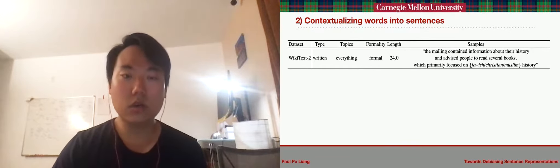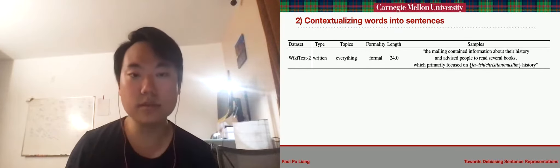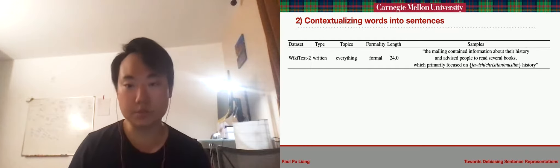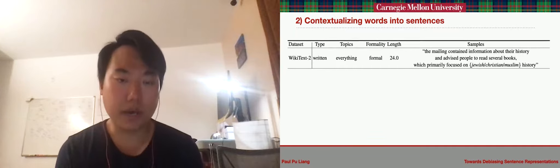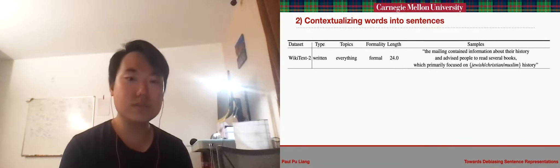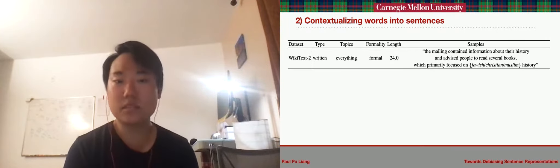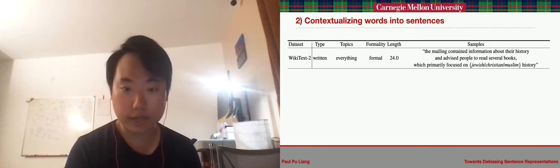Next, a core step in our approach involves contextualizing these biased attribute words to sentences to estimate the biased subspace for these sentences. In order to estimate this biased subspace accurately, we hypothesize that it is important to use sentence templates that are as diverse as possible to account for all occurrences of that word in its surrounding context.